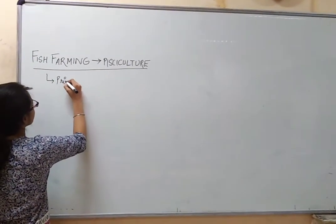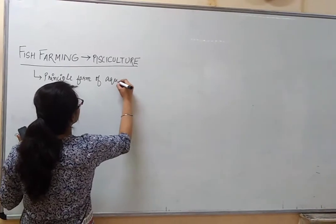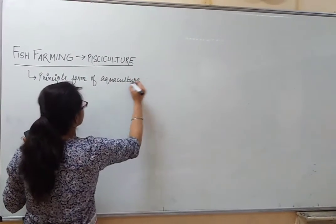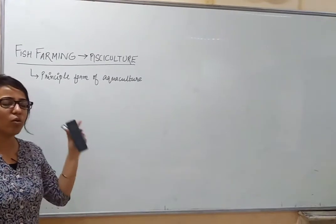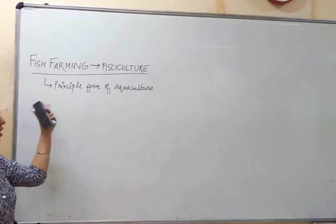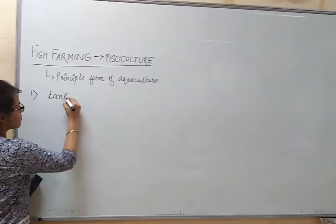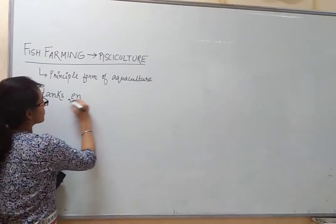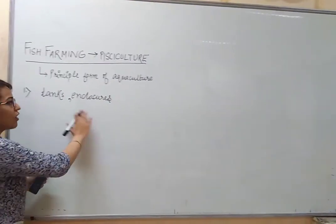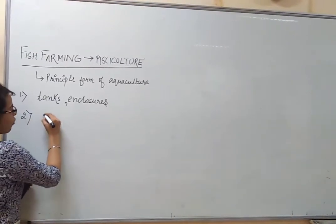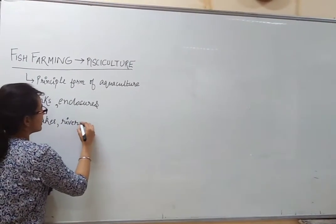Pisciculture is a principled form of aquaculture — 'aqua' means water. Basically, the fishes are cultured in the water. It can be done artificially. Various kinds of systems have been developed. It can be done in tanks or enclosures, meaning you are raising fishes artificially. Or it can be done naturally in lakes, rivers, or any other water body.